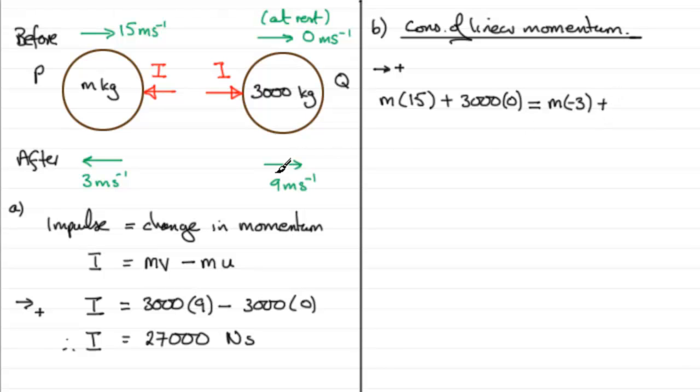We add to this the momentum of Q after impact, so it's the mass 3000 multiplied by the velocity, and it's 9 meters per second to the right in the positive sense. That's going to be multiplied by 9.